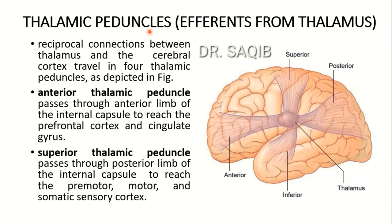There are four thalamic peduncles. The reciprocal connections between the thalamus and the cerebral cortex travel in these four thalamic peduncles. The anterior thalamic peduncle passes through the anterior limb of the internal capsule to reach the prefrontal cortex and cingulate gyrus. The internal capsule will be discussed in a separate lecture.